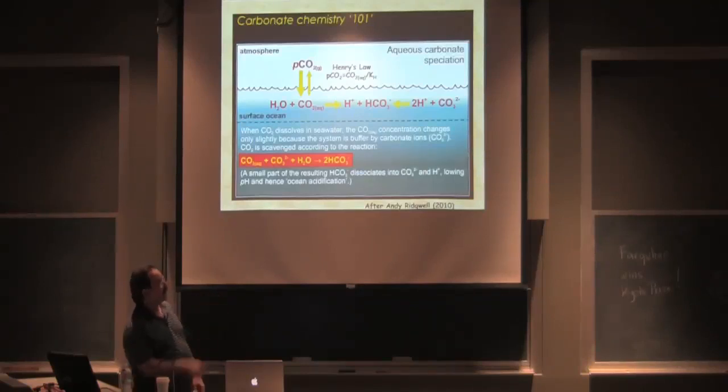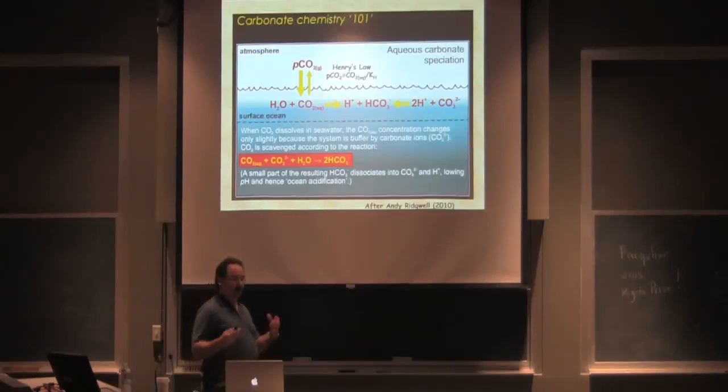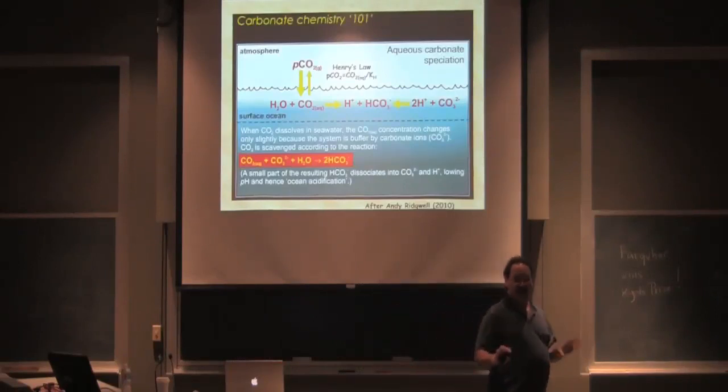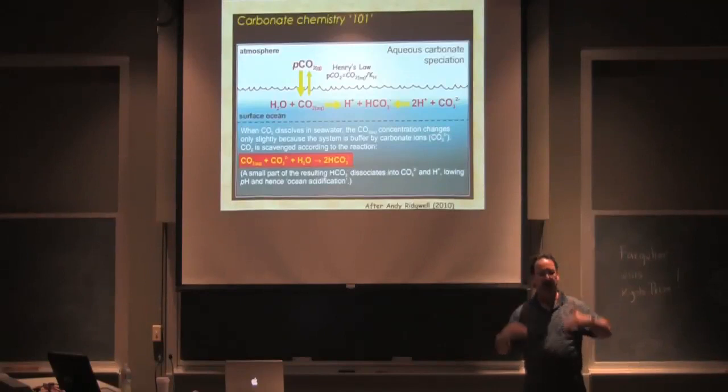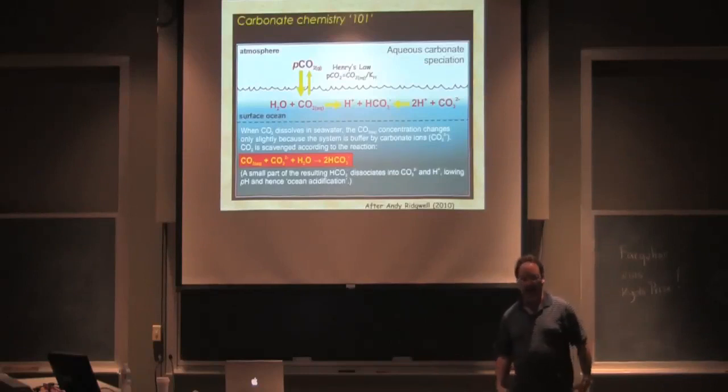CO2 plus water makes carbonic acid, and it dissociates a proton to make bicarbonate, and it can dissociate another proton to make carbonate. That 2H+ is really one of these. So in effect, the inorganic carbon system is the dynamic buffer that we have on planet earth to help ameliorate the rapid rise of CO2 in the atmosphere.